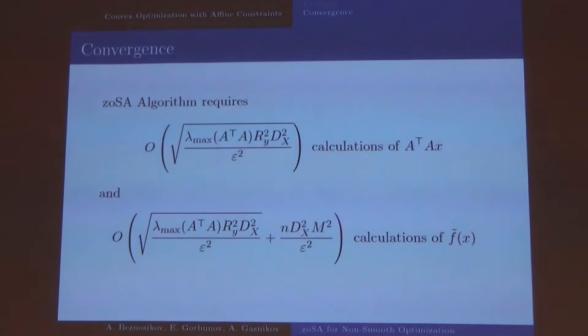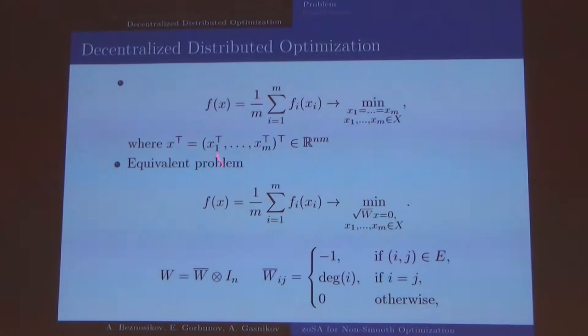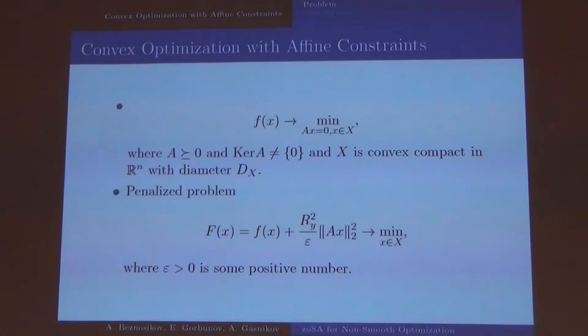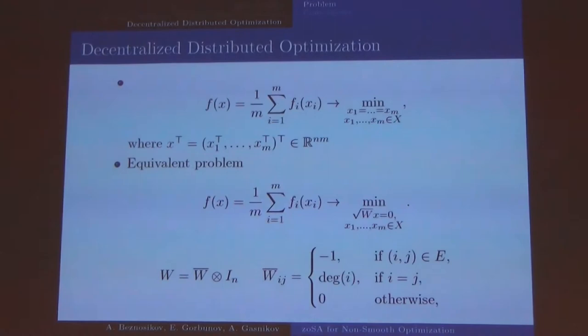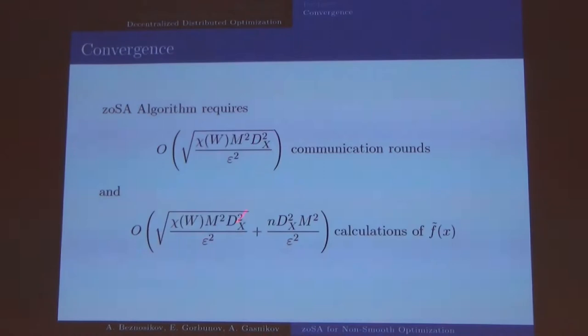And for decentralized distributed optimization this problem we can rewrite like this, it's an affine constraint and we can rewrite it like this and try to use our methods for this new problem. And we have some convergence for this problem.